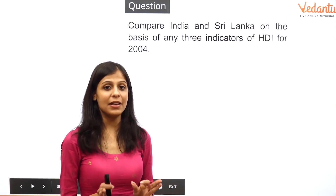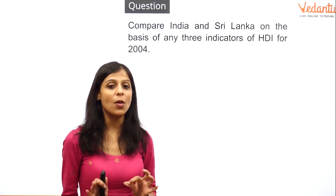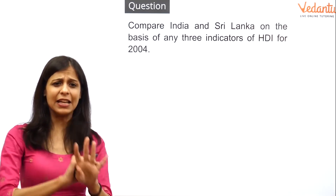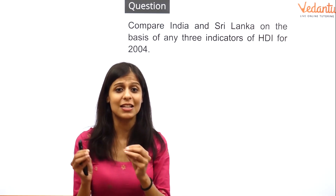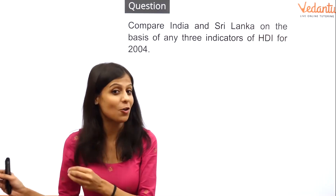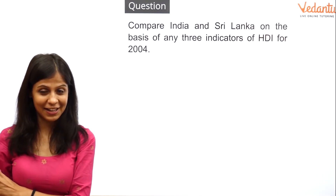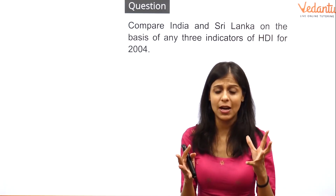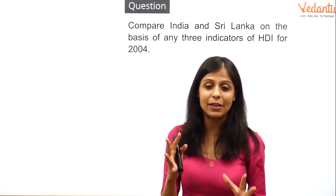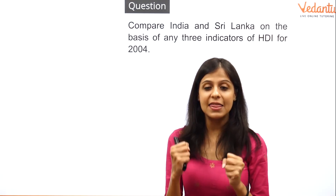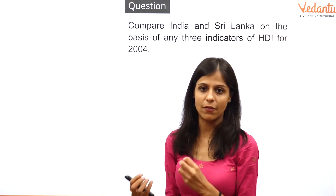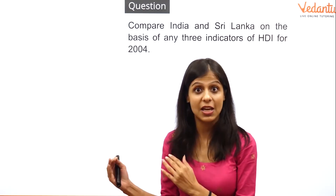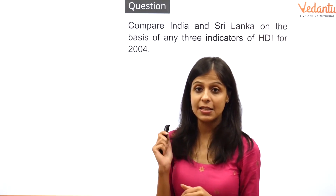The first question is: compare India and Sri Lanka on the basis of three indicators of HDI. Social studies is all about evaluating facts — interpreting them, getting the best out of them, and putting that knowledge to use. So it's very important that you know what HDI is and what it stands for before jumping directly to the answer.